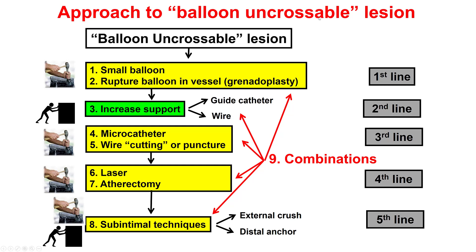So how do we approach these balloon-uncrossable lesions? The first step is to try a small balloon — in this case the Sapphire Pro 1.0, the lowest profile currently available in the US — and we can also rupture the balloon in the vessel with a 1.0 to 1.5 mm balloon. The next step is to increase support using a guide catheter extension. Then, if this doesn't work, try various microcatheters — in our case both a Turnpike LP and a Caravel microcatheter. There is also a wire cutting technique in which a second wire is advanced followed by alternating balloon inflations, but we were unable to get a second workhorse wire across the lesion.